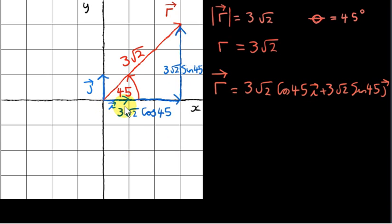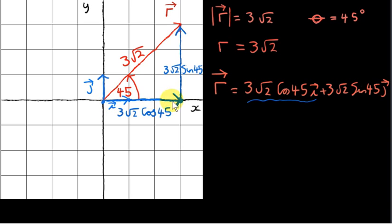In the previous video, we talked about unit vector i, which points in the positive x direction. Its length is 1, so its tail is at the origin and its head is at plus 1. Because this side of the right-angled triangle has length 3 root 2 cos 45, we can say that this horizontal vector, whose tail is at the origin and whose head is at this point, must be the length 3 root 2 cos 45 multiplied by vector i, because vector i has just a length of 1. So this horizontal vector is 3 root 2 cos 45 times unit vector i.